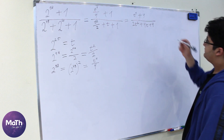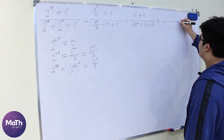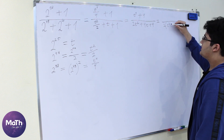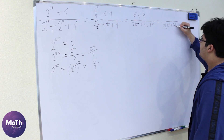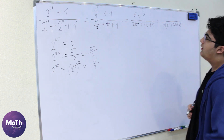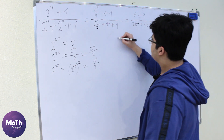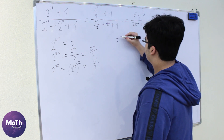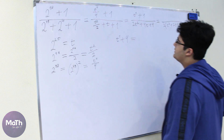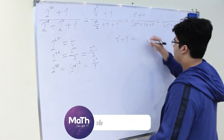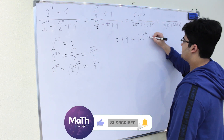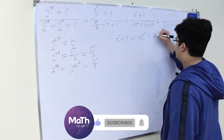So the denominator is 2 multiplied by t squared plus 2t plus 2. And for the numerator, t to the power of 4 plus 4, we can write this as t squared squared plus 2 squared.